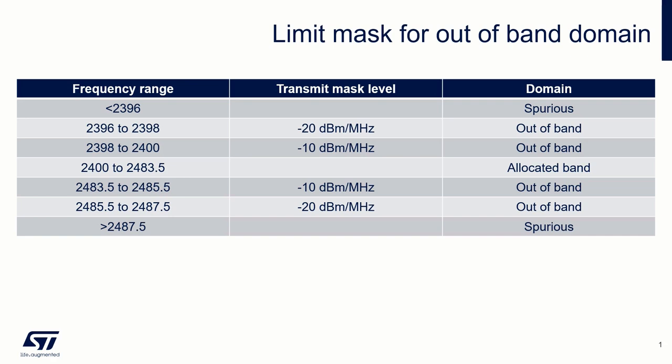Emissions falling within the 2 MHz band below and above the allocated band have a limit of minus 10 dBm over MHz. This table also defines another band related to the spurious domain, which we will discuss later.